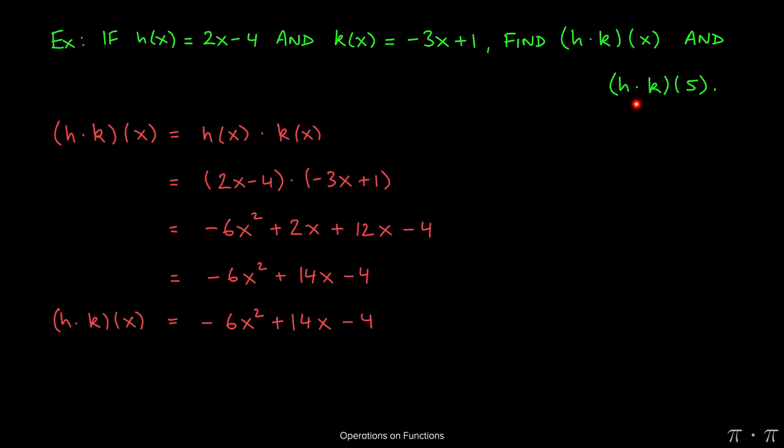For the second half of the question where we're asked to find (h ⋅ k)(5), we're just doing a function evaluation. That means wherever we see an x, we replace it with 5.